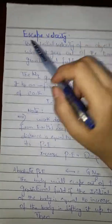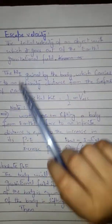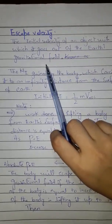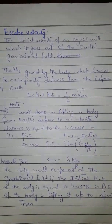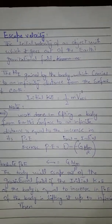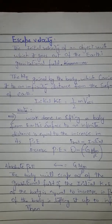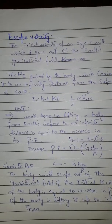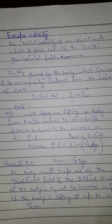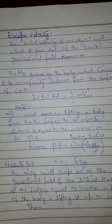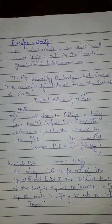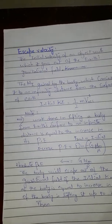Assalamu alaykum everyone, welcome to Universal Forum. Today the topic I am going to discuss is escape velocity. Escape velocity is the initial velocity of an object with which it goes out of the earth's gravitational field. In our daily life we experience many objects projected upward come back to the ground after rising to a certain height. This is due to the force of gravity acting on it, which attracts it to move downwards.